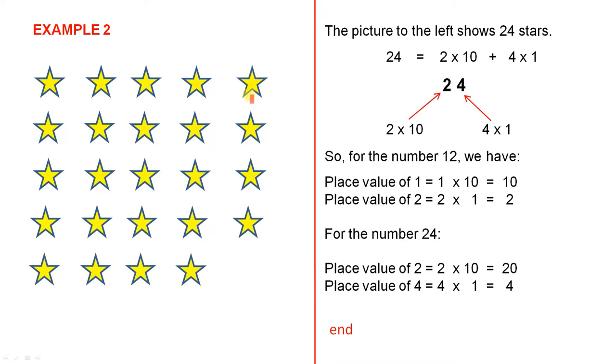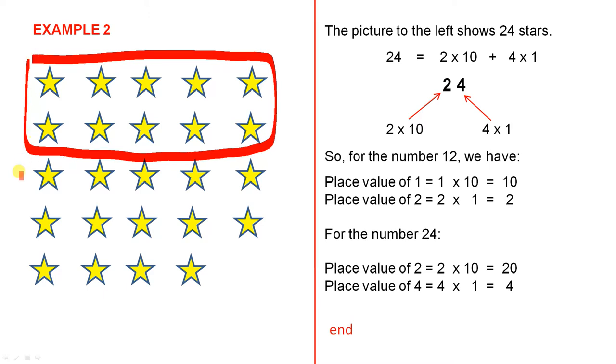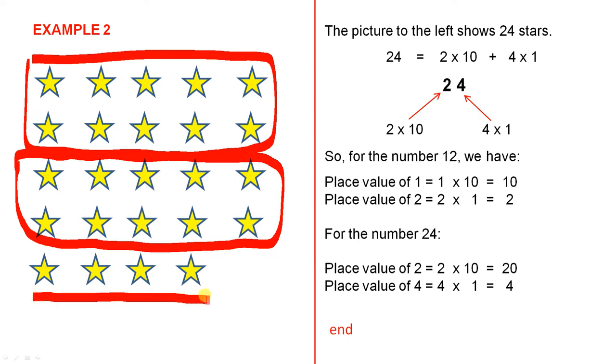Let's look at the next example. Look at these stars here. Have a close look at them. The picture to the left shows 24 stars. So 24 equals two lots of 10 and four single stars. So 24 equals two lots of 10—that's what the two means—and four ones. Let's have a look in the diagram. Here's one lot of 10, and here's the next lot of 10. So how many lots of 10 are there? There are two of them. One lot of 10, another lot of 10, and four single stars.